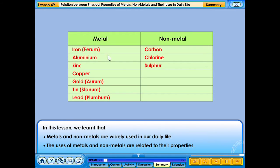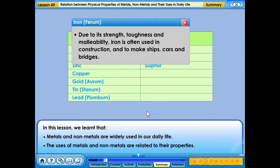Due to its strength, toughness and malleability, iron is often used in construction and to make ships, cars and bridges.